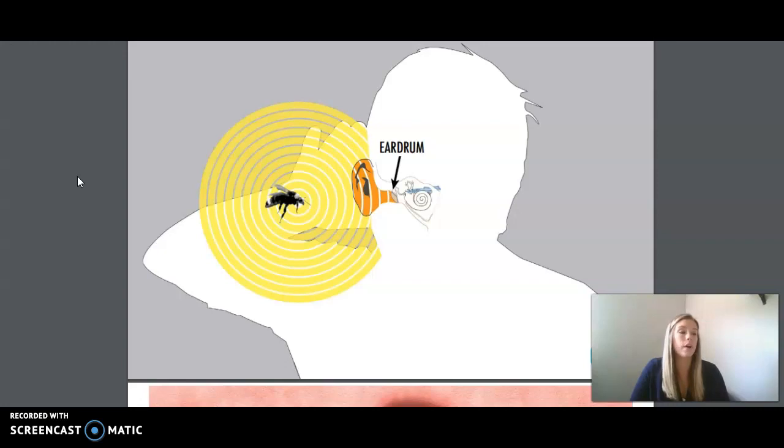For you to hear sounds, vibrations must travel from your outer ear through your middle ear to your inner ear and onto your brain for processing. Let's follow a sound wave through an ear to see how it works.